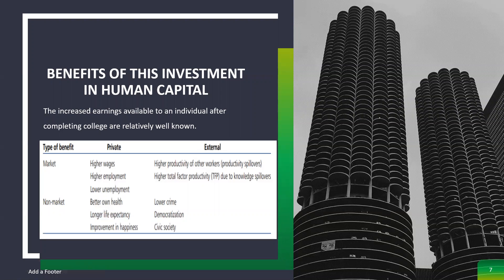Benefits of this investment in human capital. The increased earnings available to an individual after completing college are relatively well-known. Types of benefits include private and external market benefits: high wages, higher employment, and better non-market outcomes such as better health, longer life expectancy, and improved happiness. External benefits include higher productivity of other workers, productivity spillovers, and higher total factor productivity due to knowledge spillovers. Non-market external benefits include lower crime, democratization, and civic society.